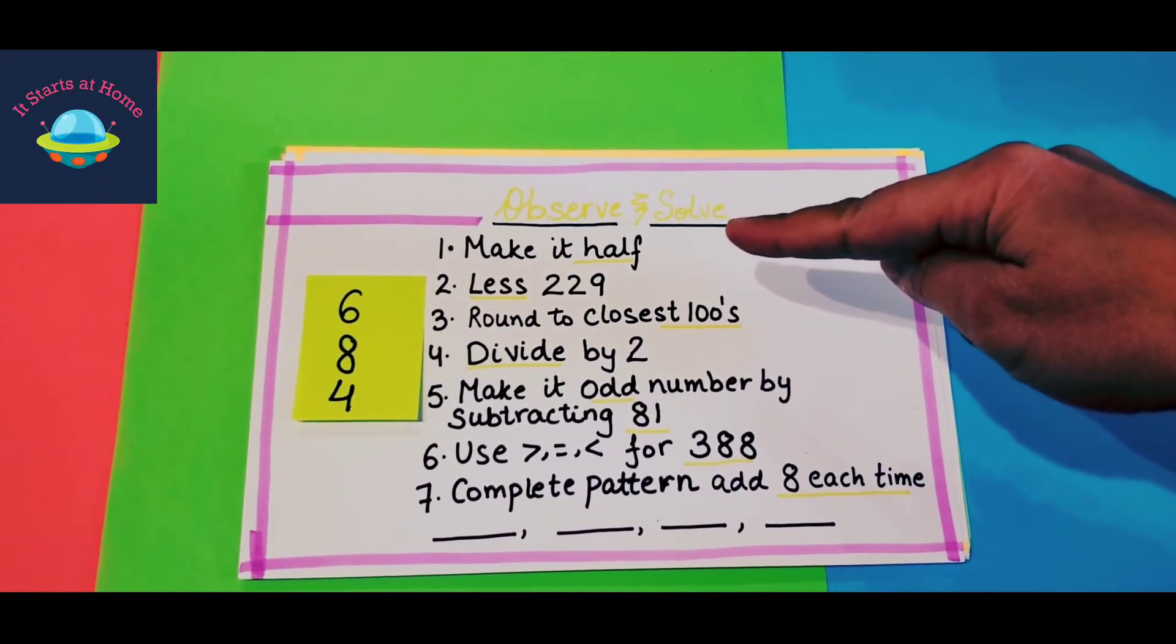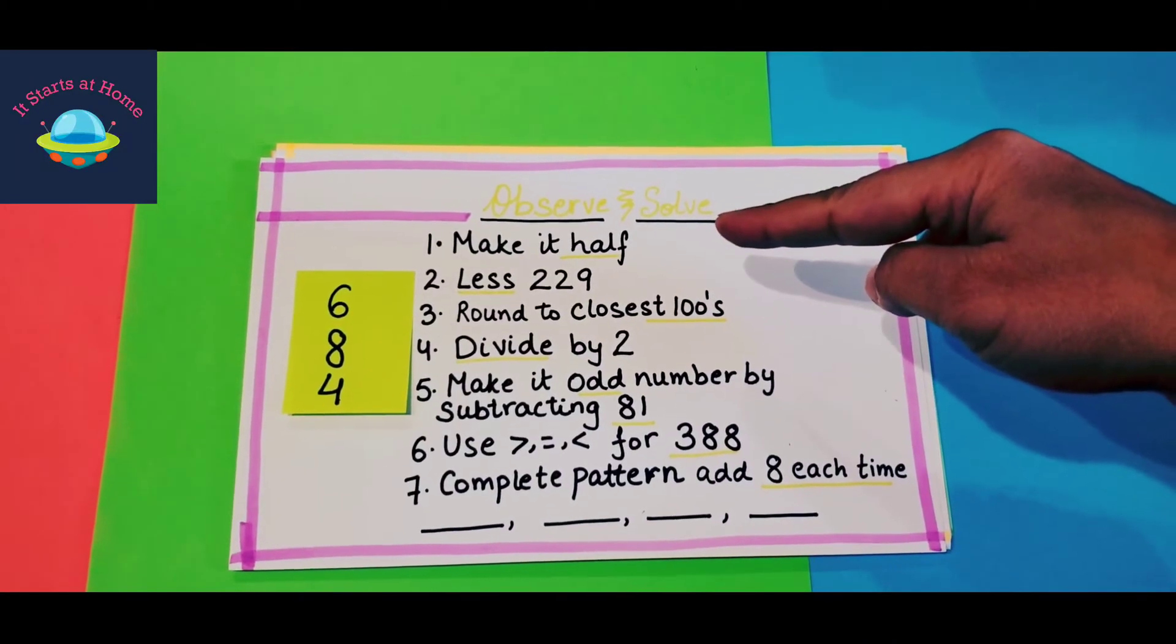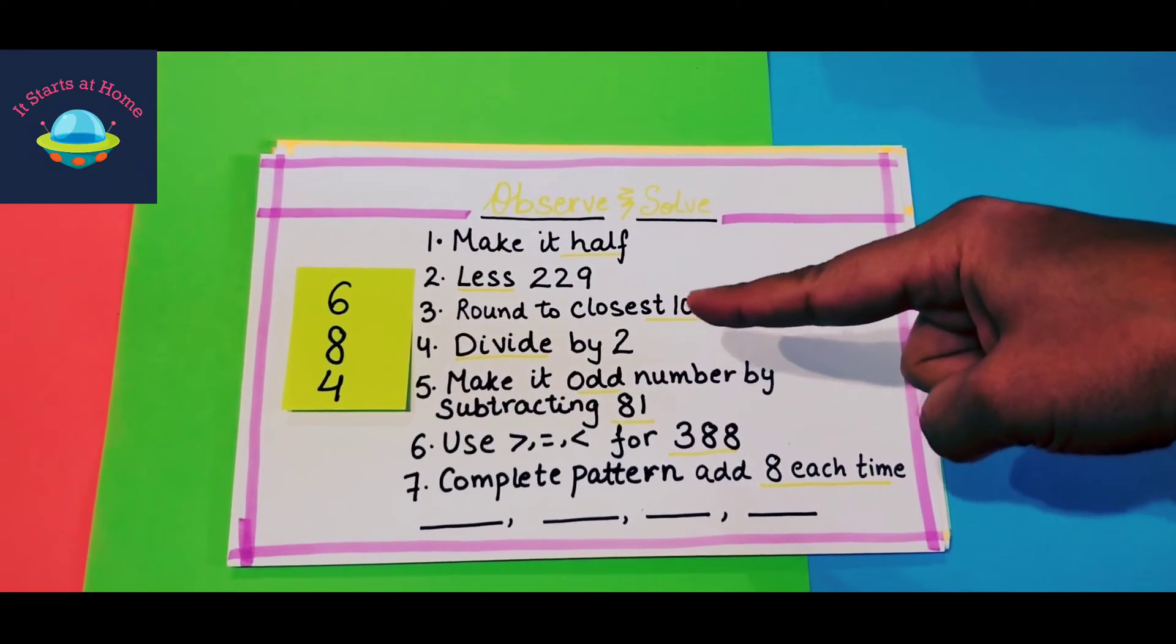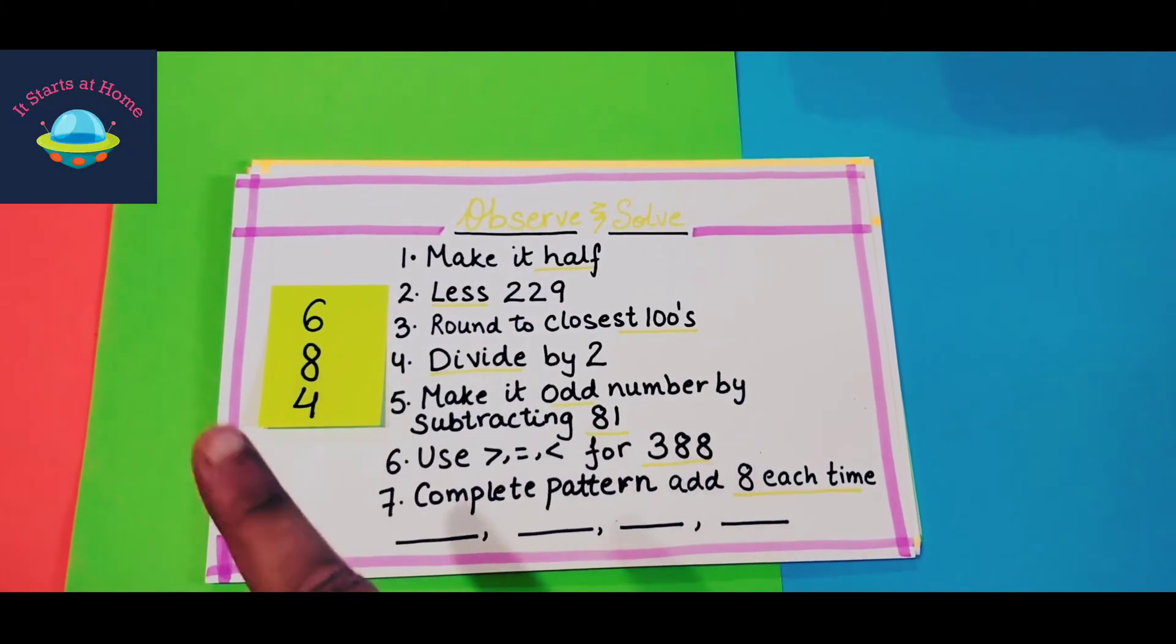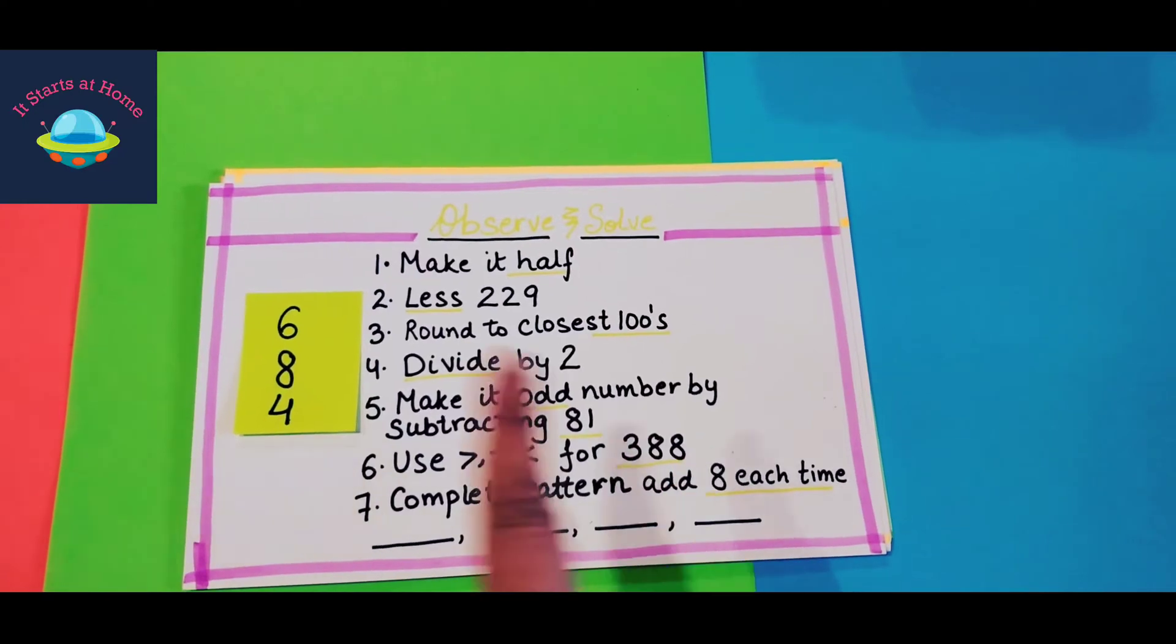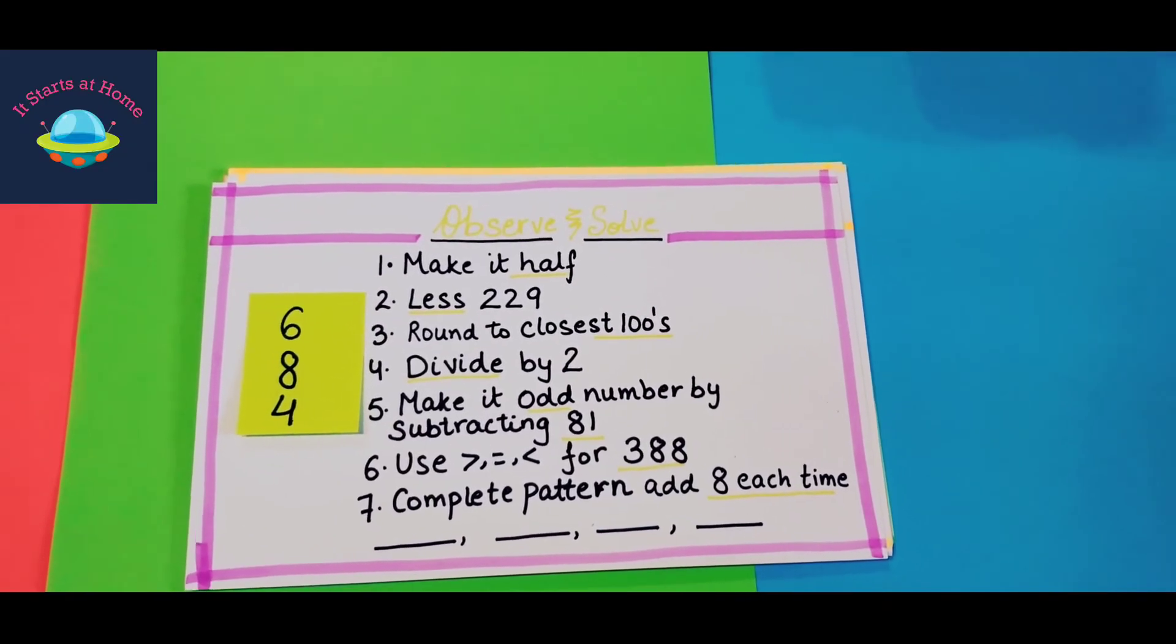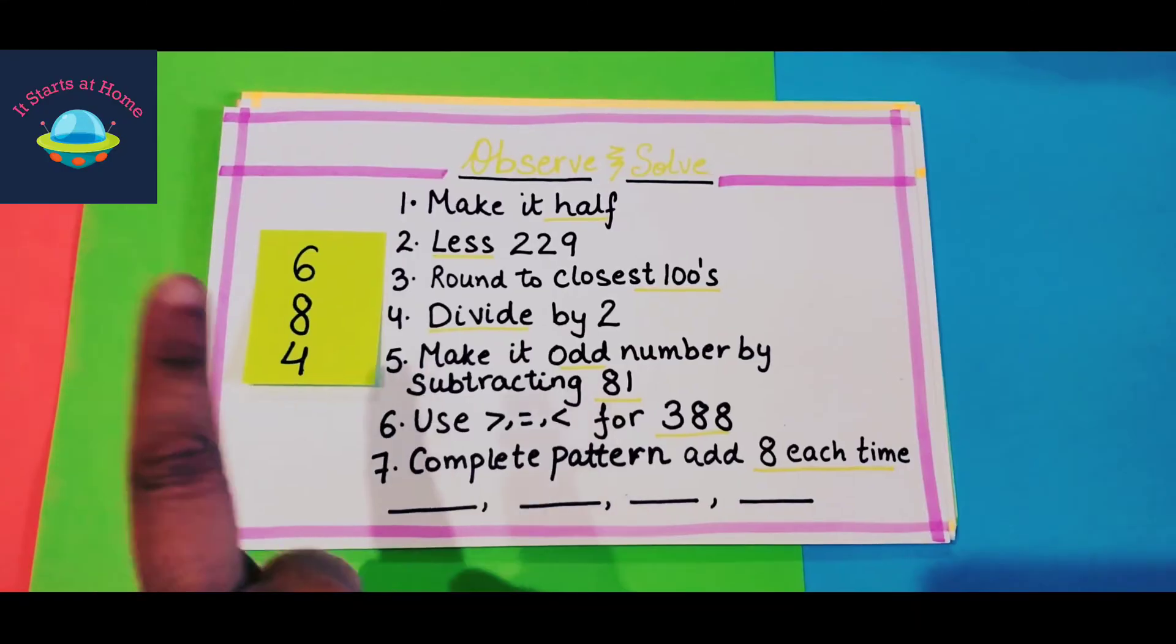So the first thing is you make it half, then you less 229, then you round to the closest hundreds, then you divide by 2, make it an odd number by subtracting 81, use the greater than, less than, or equal to sign for 388 comparing to this number, and complete the pattern and add 8 each time. So there are seven things that need to be done with just one number.